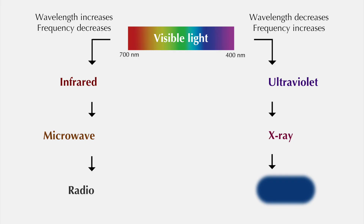The final type of EM radiation is positively frightening. It's produced not only by stars, but also by nuclear explosions and radioactive metals.